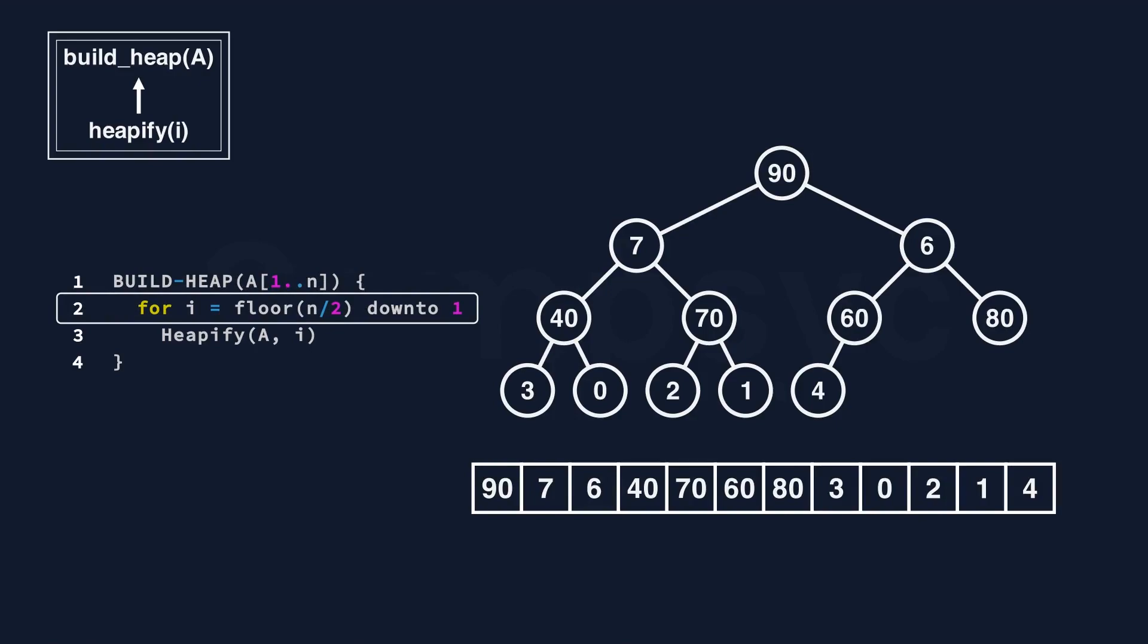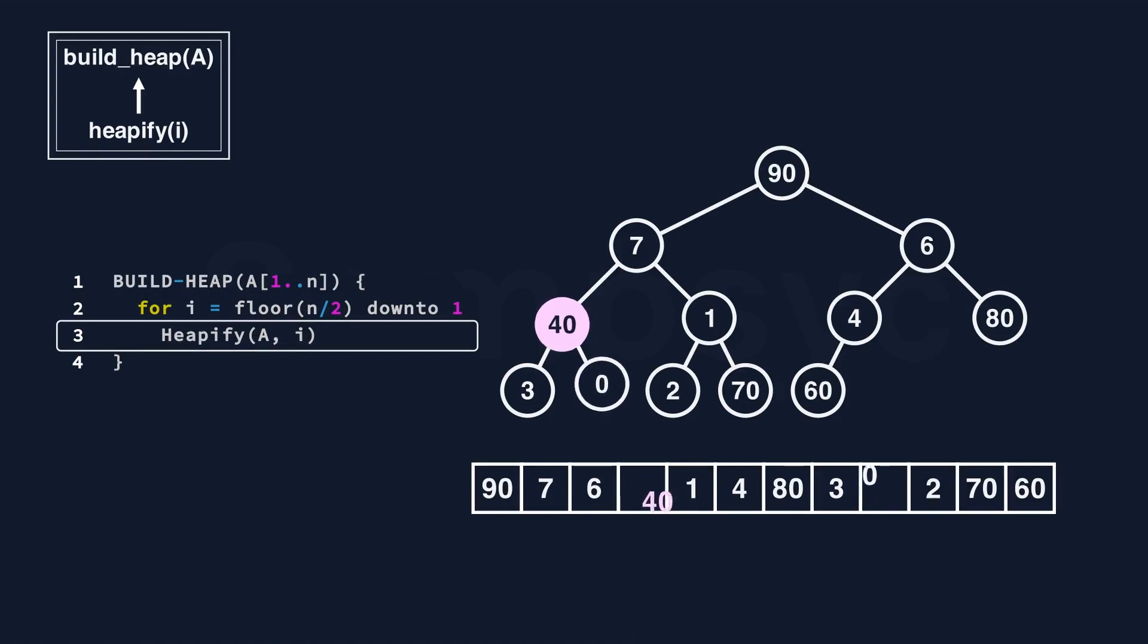The first node being selected is 60. We start to heapify 60. Since it's smaller than 4, we switch them to let the larger number appear on the bottom. Now 60 arrived at the right position for now. Heapify completed. The next one to be heapified is 70. Then we heapify 40. Then we heapify 6.